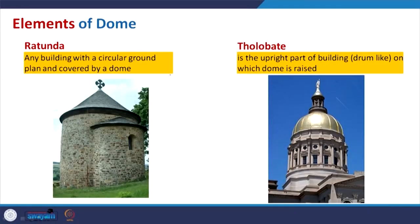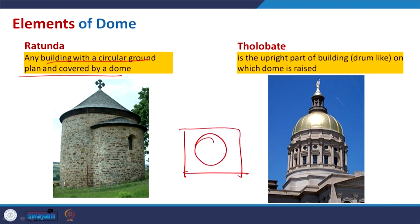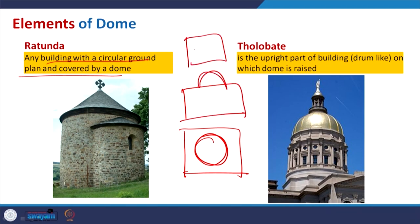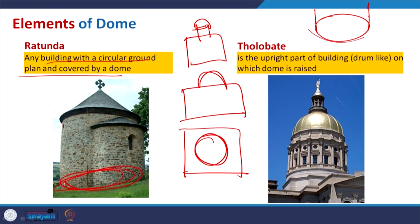What is a rotunda? A rotunda is basically any building with a circular ground plan covered by a dome. In many buildings you will find a dome placed at the center — it may use a drum and look like this. The plan itself is a cylindrical form — the whole volume is cylindrical and the plan is circular.